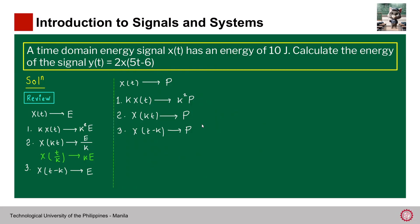So now that we are done reviewing the concept, let us answer the problem. In this particular problem, our signal is x(t) and the energy, according to the problem, is 10 joules. Energy is 10 joules. Now, we are asked to solve for the energy of y(t), which is obtained by performing several operations on independent and dependent variable.